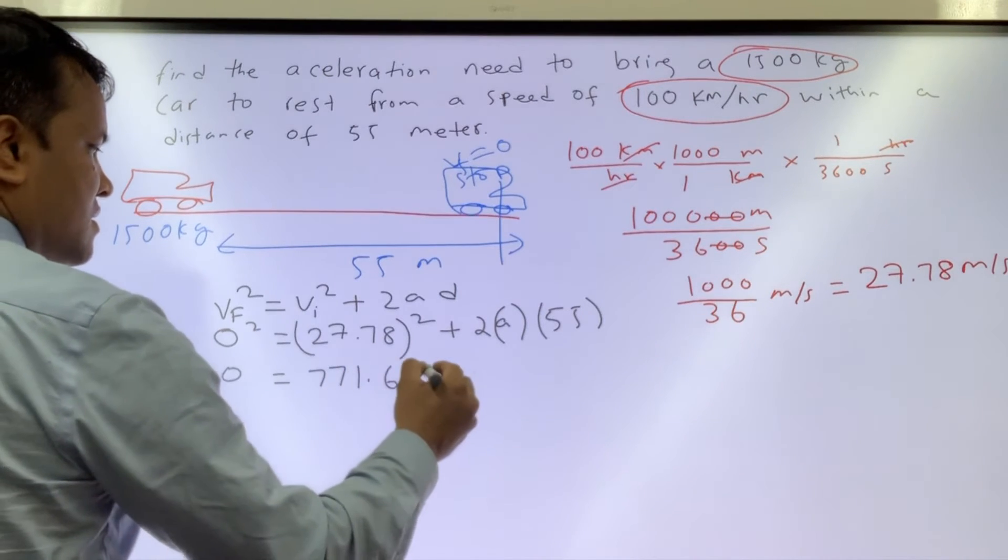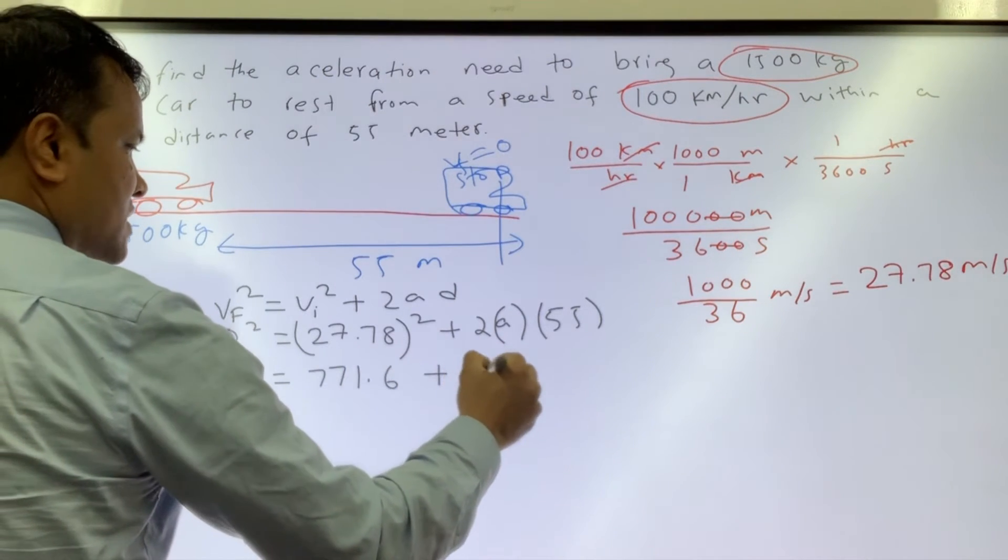Negative 771.6 is equal to 110a. So a is negative 771.6 divided by 110.